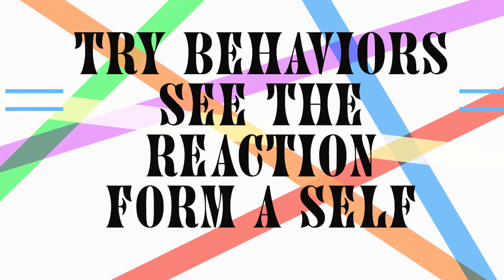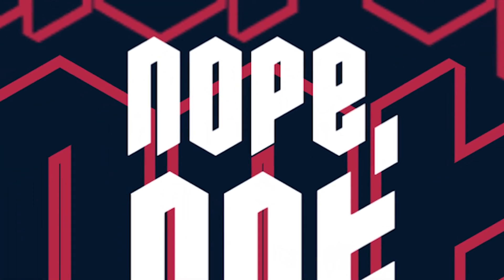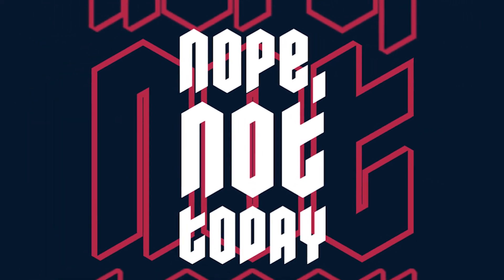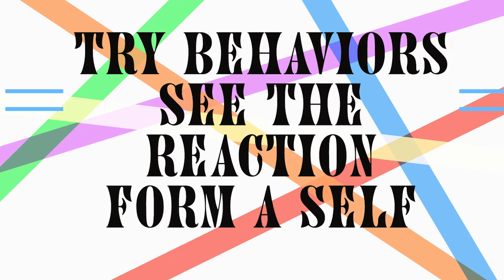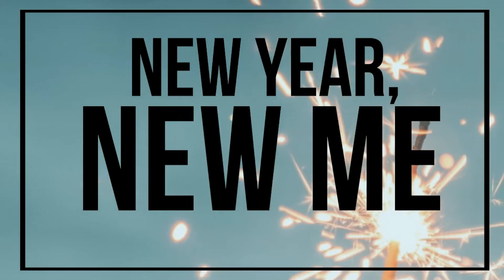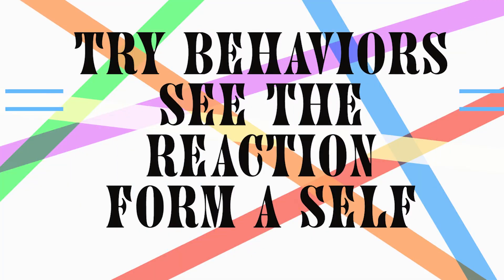When our sense of self is well developed and we get disconfirming evidence of who we are, we manage it in several ways: we might cognitively deny the response, discount the source of the reaction, or ignore it as a fluke. But if our sense of self is not fully developed, or if disconfirming responses are massive and continuous, we rework our self-image, try out new behaviors in line with our new idea of self, and wait to see if others accept those new claims. The search for a stable, satisfying, and socially acceptable self motivates all kinds of behaviors.